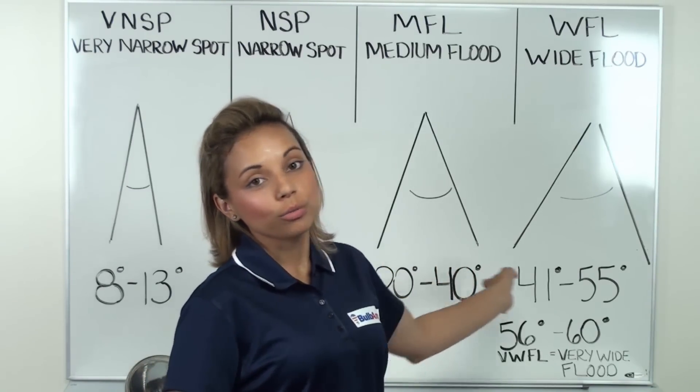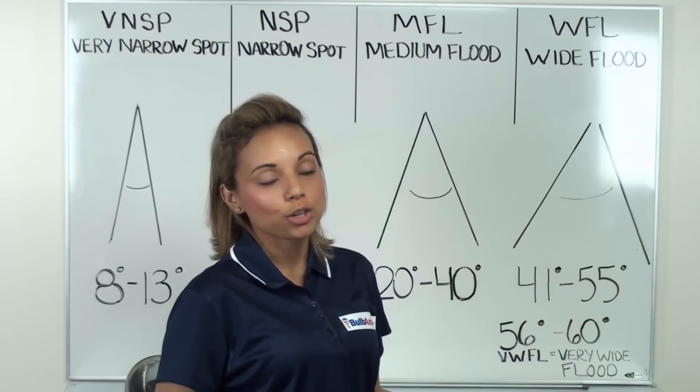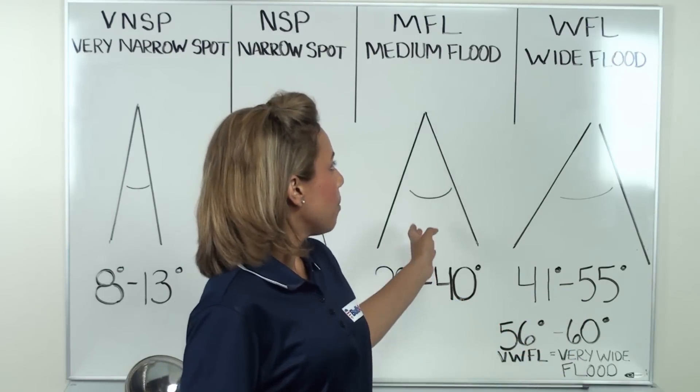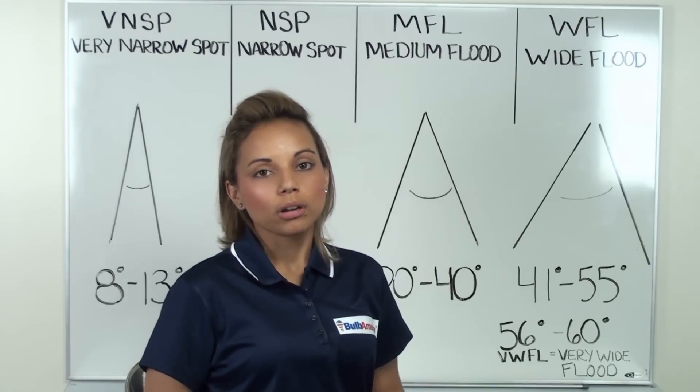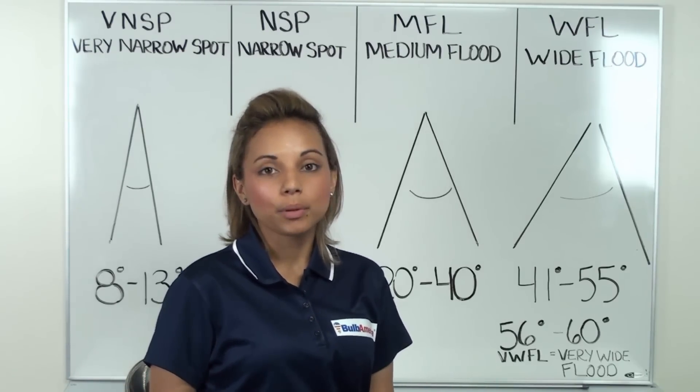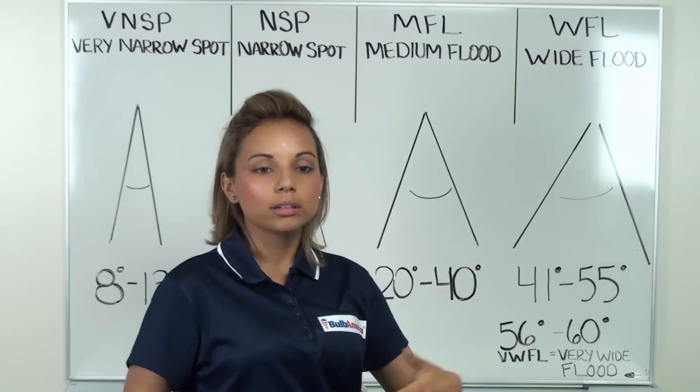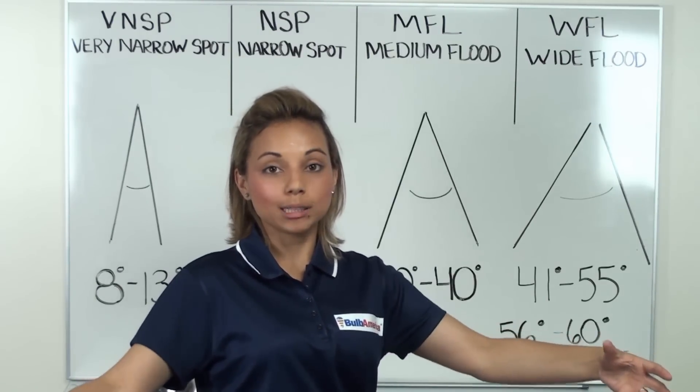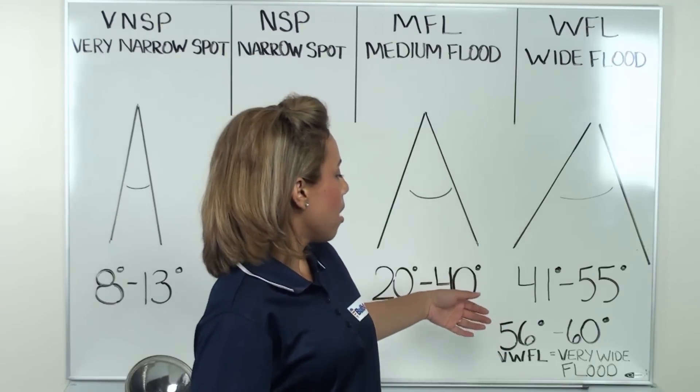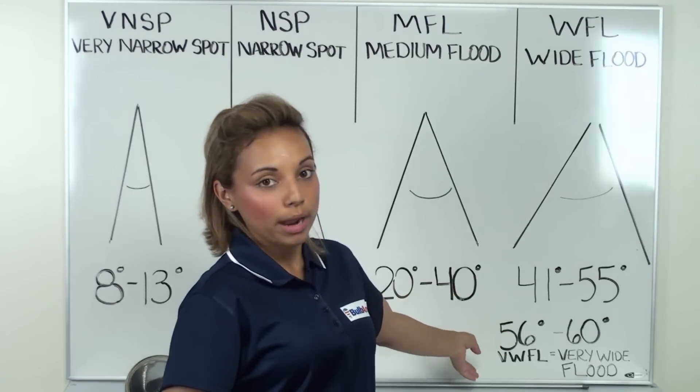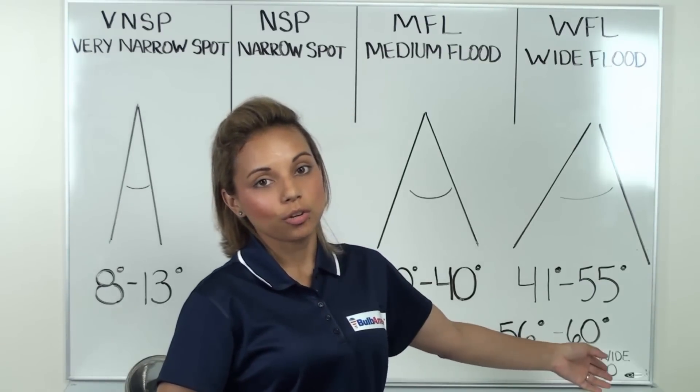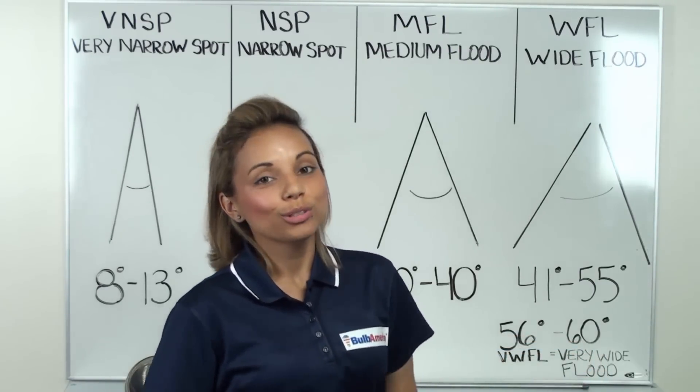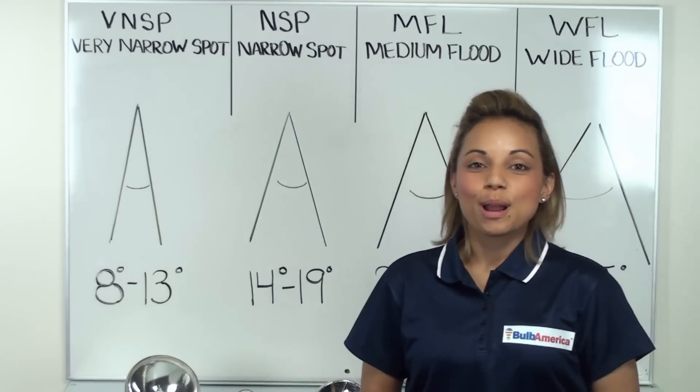Also keep in mind that the degree range depends on the manufacturer. A Medium Flood is generally used for your home. It's very popular because a Medium Flood covers a very wide space. And then there's also a very wide flood, which ranges from 56 degrees to 60 degrees. And those are the categories for beam spread.